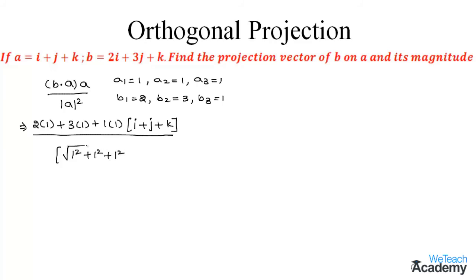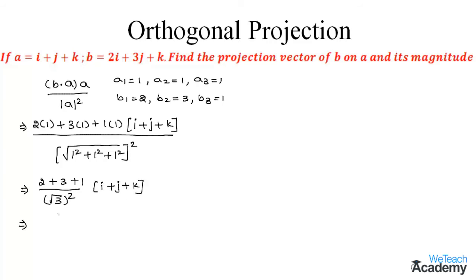Since the coefficients of i, j, k in A bar are all 1, we simplify: 2×1 = 2, plus 3×1 = 3, plus 1×1 = 1, divided by (√3)² = 3, times (i + j + k). Adding the numerators gives 6 divided by 3 times (i + j + k). Simplifying, we get 2(i + j + k) as the projection vector of B bar on A bar.